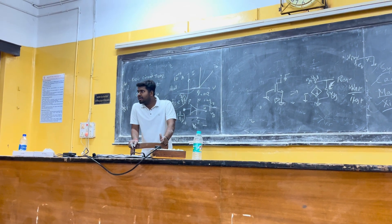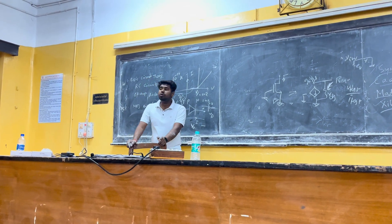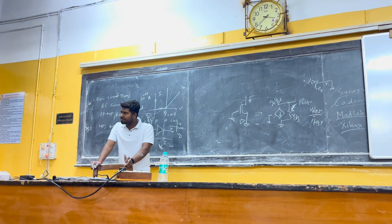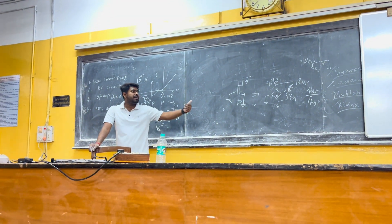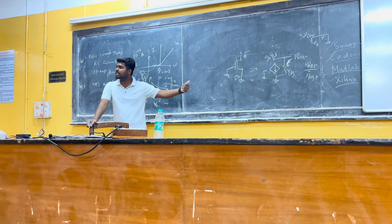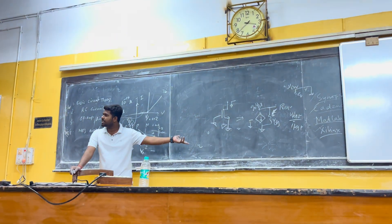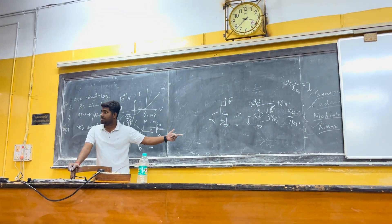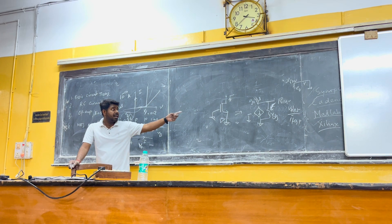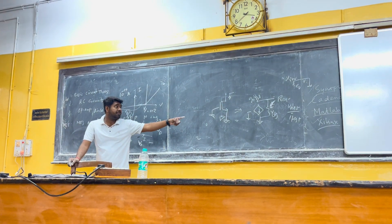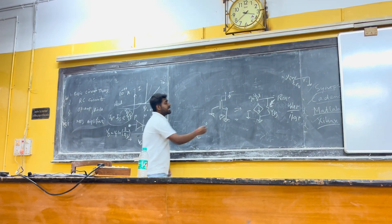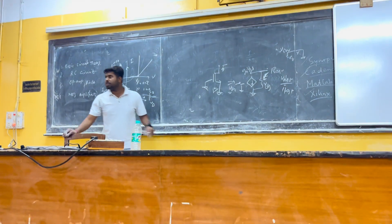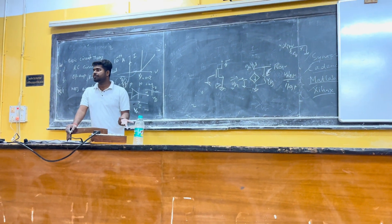The input impedance from the gate is only RGS; if RGS is not present it will be infinite. This is the phenomenon — this is why we go for MOSFETs, because they have very high input impedance from the gate. The input impedance is infinite, so it is very good for voltage-to-voltage amplification when taking the output from the gate.